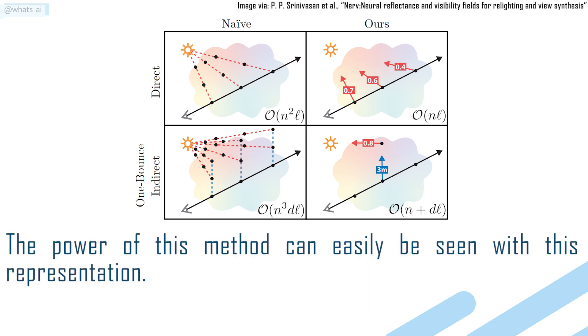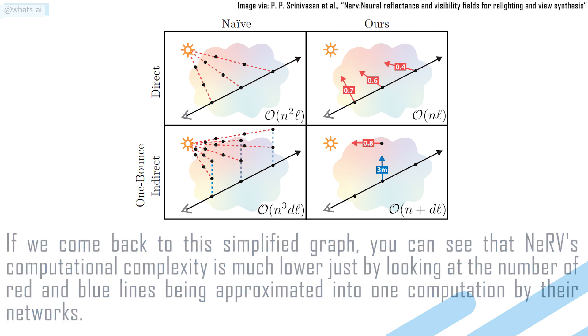The power of this method can easily be seen with this representation. If we come back to this simplified graph, we can see that NeRV's computational complexity is much lower just by looking at the number of red and blue lines being approximated into one computation by their networks.